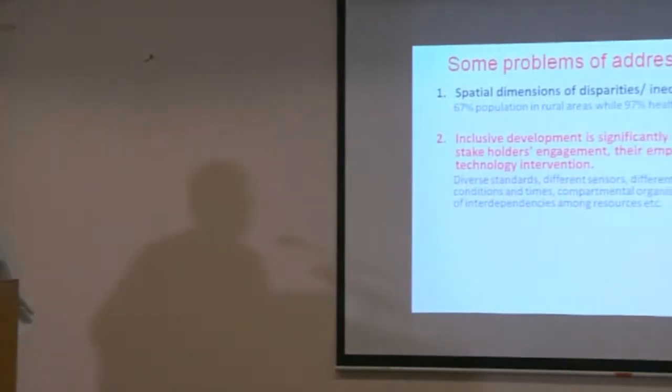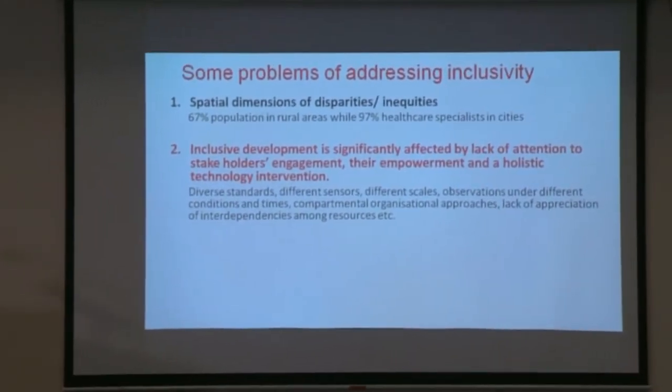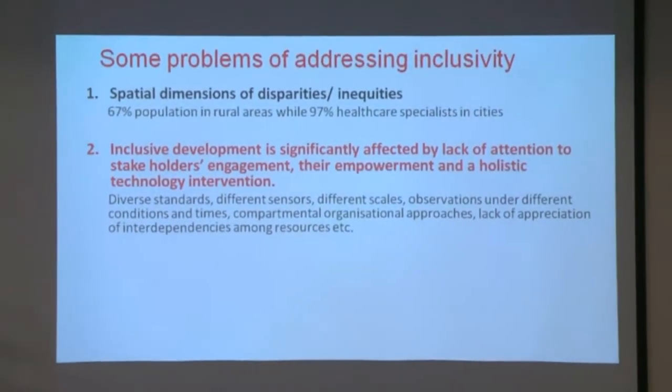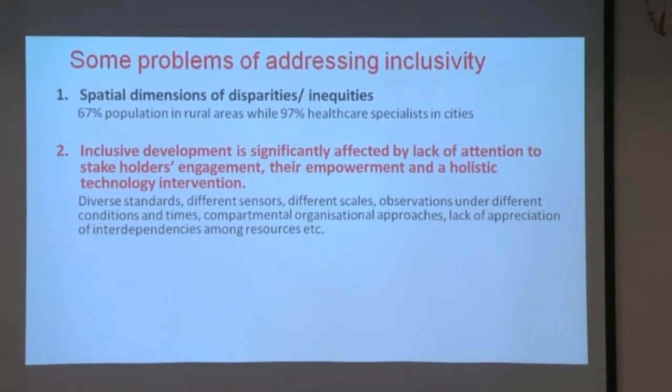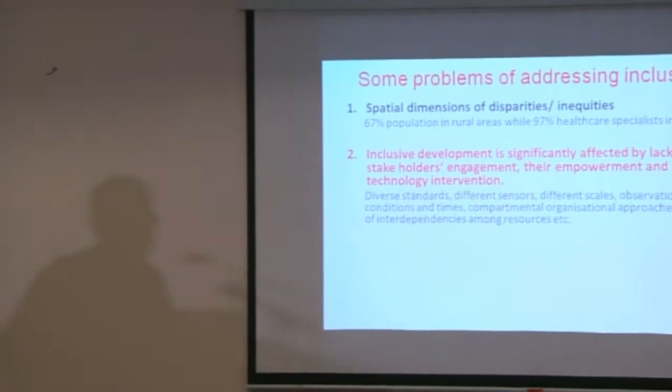The second striking problem that we see is working in silos in several organisations, particularly in government — and it is not only in government, even in society we see this behaviour. Whereas we need to optimally use resources, and many of the resources are interrelated. If we talk about the water problem, water as a resource is connected to several aspects and other aspects of the environment. We need a holistic look when we talk about sustainable and optimal use of resources.